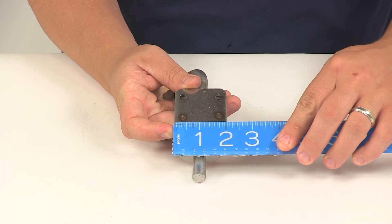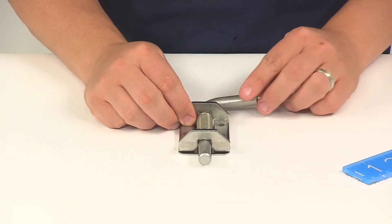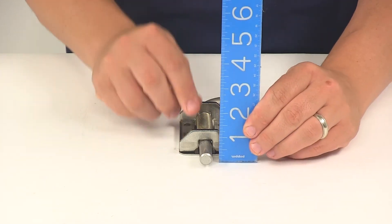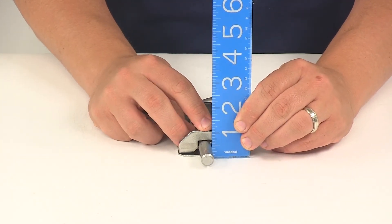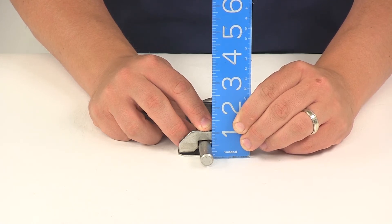Edge-to-edge this direction measures two inches wide, and then measuring bottom to top, that gives us a measurement of about one and one eighth of an inch tall, or one and one eighth of an inch deep, depending on how you have it oriented.